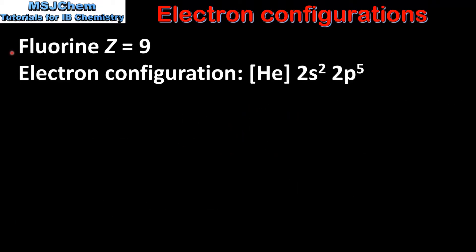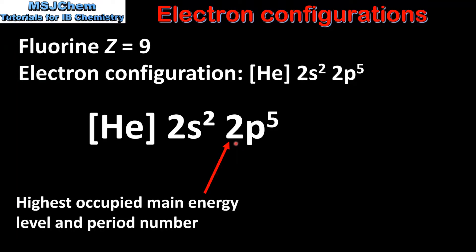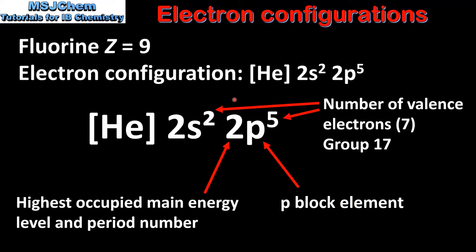The final example is fluorine, atomic number 9, electron configuration [He] 2s2 2p5. The 2 is the highest occupied main energy level and the period number, so fluorine is in period 2. The p tells us fluorine is a P block element. The valence electrons are the 2 in the 2s sublevel and the 5 in the 2p sublevel, giving a total of 7 valence electrons. Therefore fluorine is in group 17.